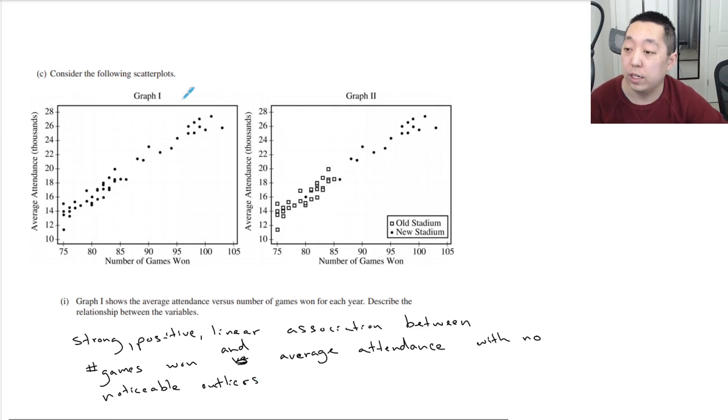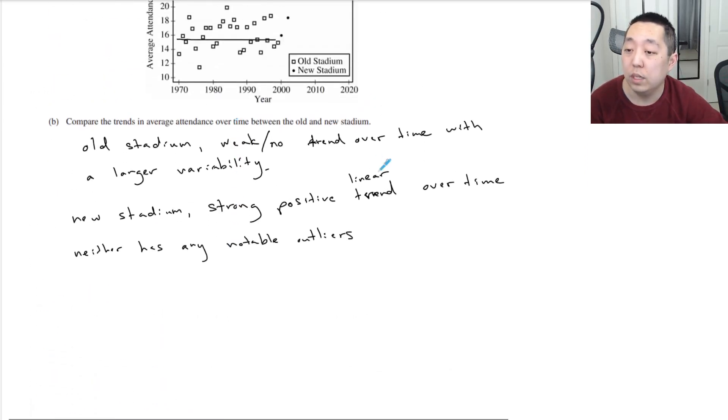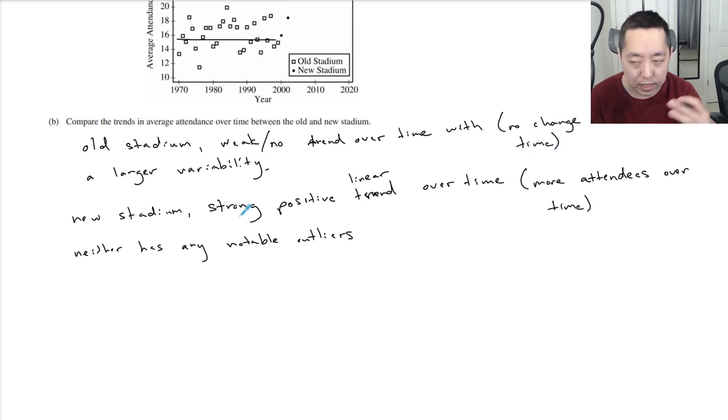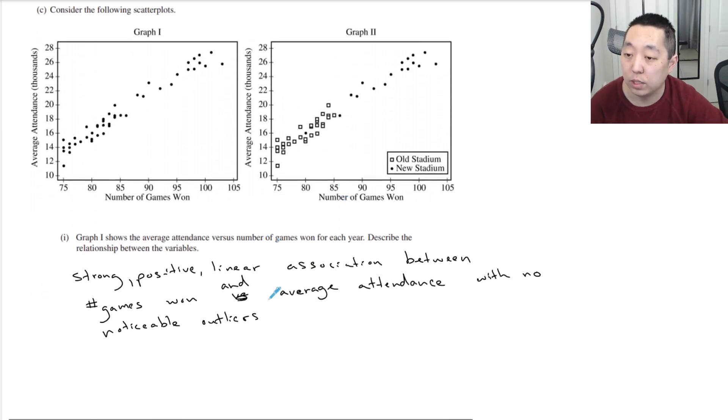It's kind of weird they want you to describe a trend on this one and a trend on this one. I mean, I would maybe say go back to B and maybe just add in the statement that, you know, more attendees over time, or this one had no change over time, because I'm wondering if maybe they weren't looking for the exact kind of standard association things that I just described in part C here.